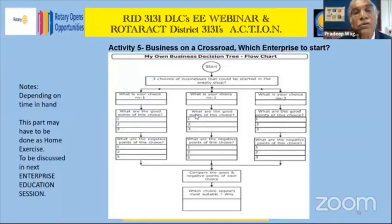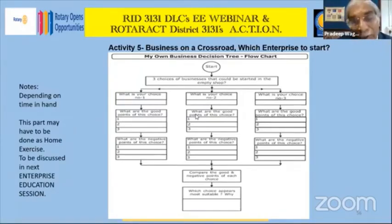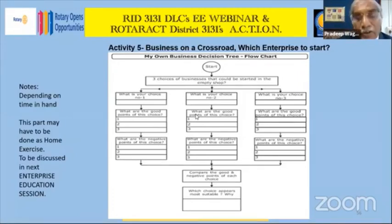You then have to fill up a decision tree where you make three choices at the crossroad, put all the good points as well as bad points, weigh them together, and come to a particular choice.